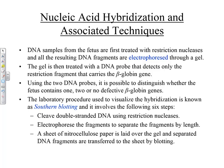The lab procedure used to visualize this hybridization is known as Southern blotting, involving six steps. First, you cut up double-stranded DNA using restriction nucleases. Then you electrophorese the fragments to separate them by length. Then you put a sheet of nitrocellulose paper over the gel and the separated DNA fragments are transferred to the sheet by blotting. A newer machine in the lab allows you to move the electrode and get the DNA to come out directly into the right slot, so you don't need the blotting paper.